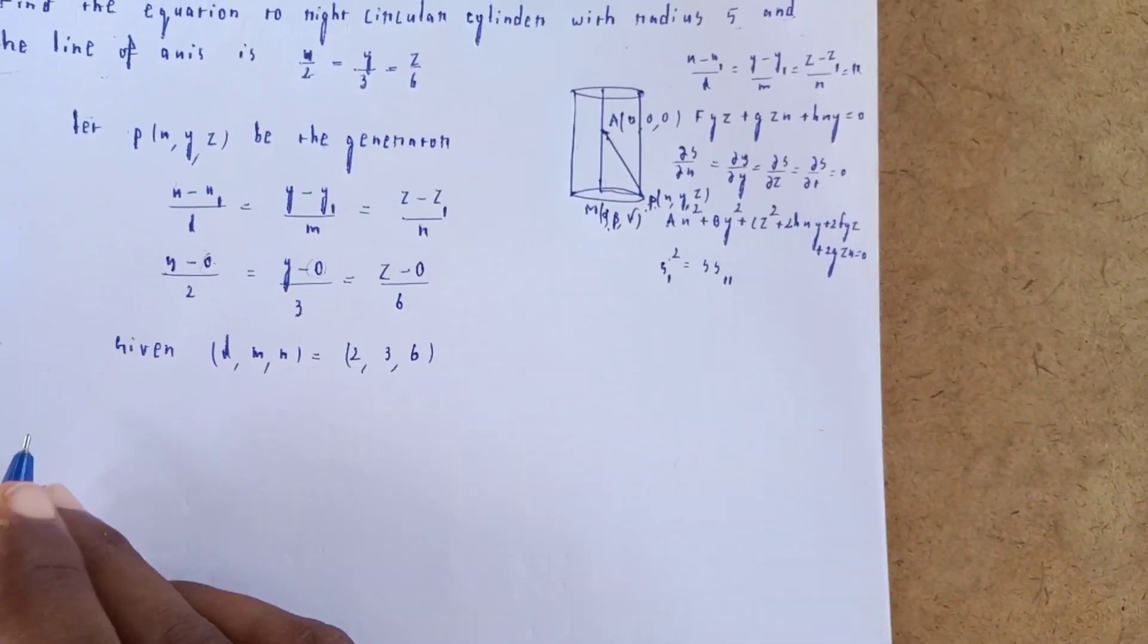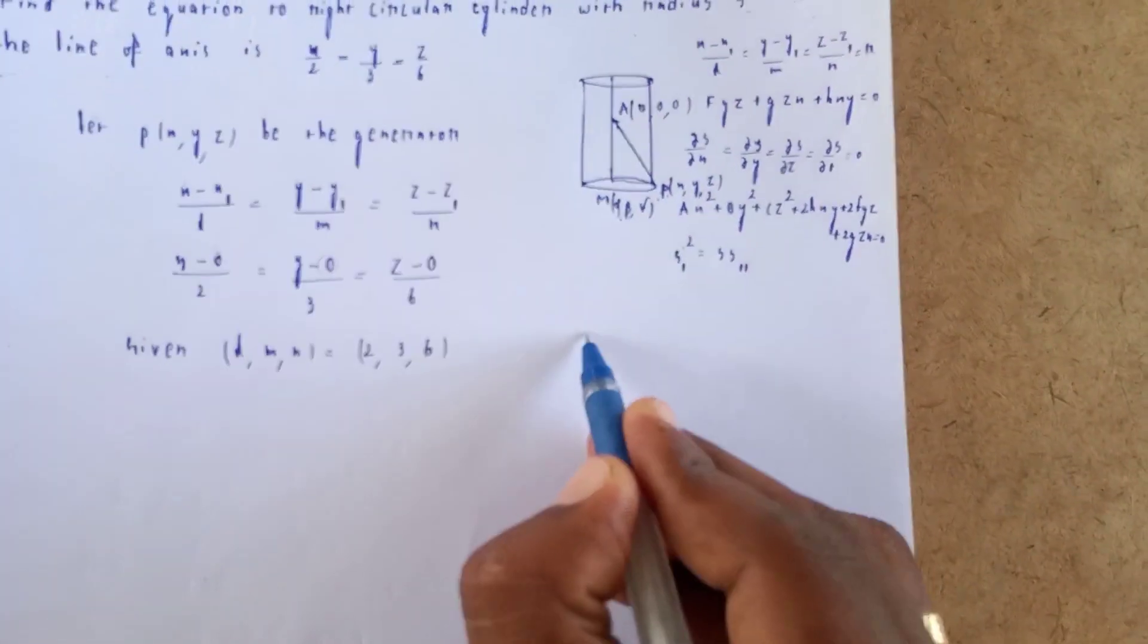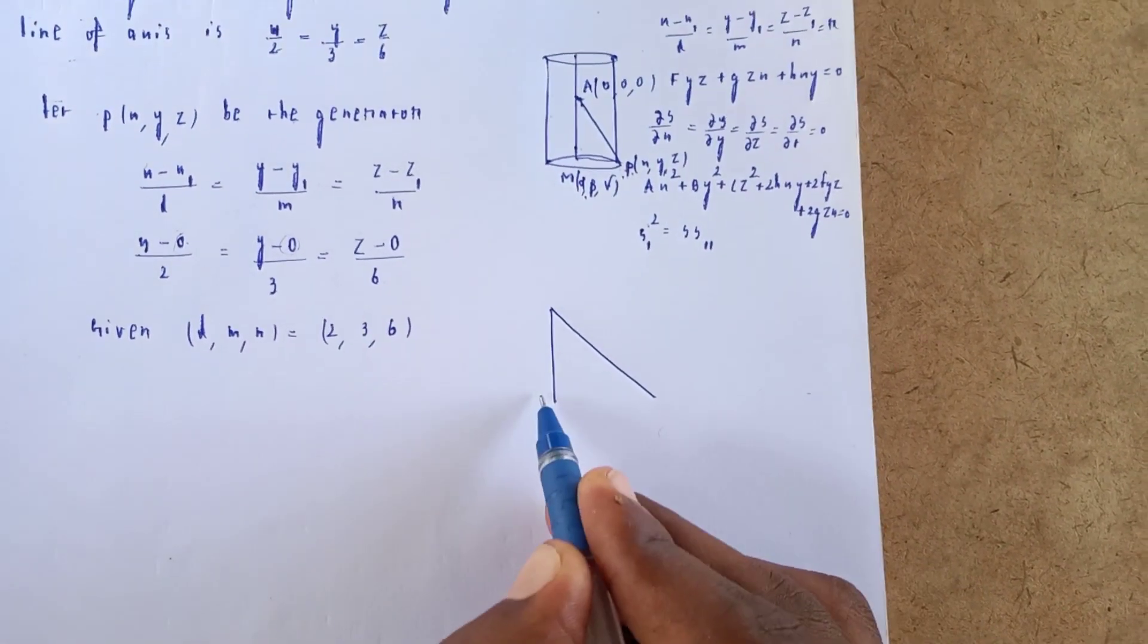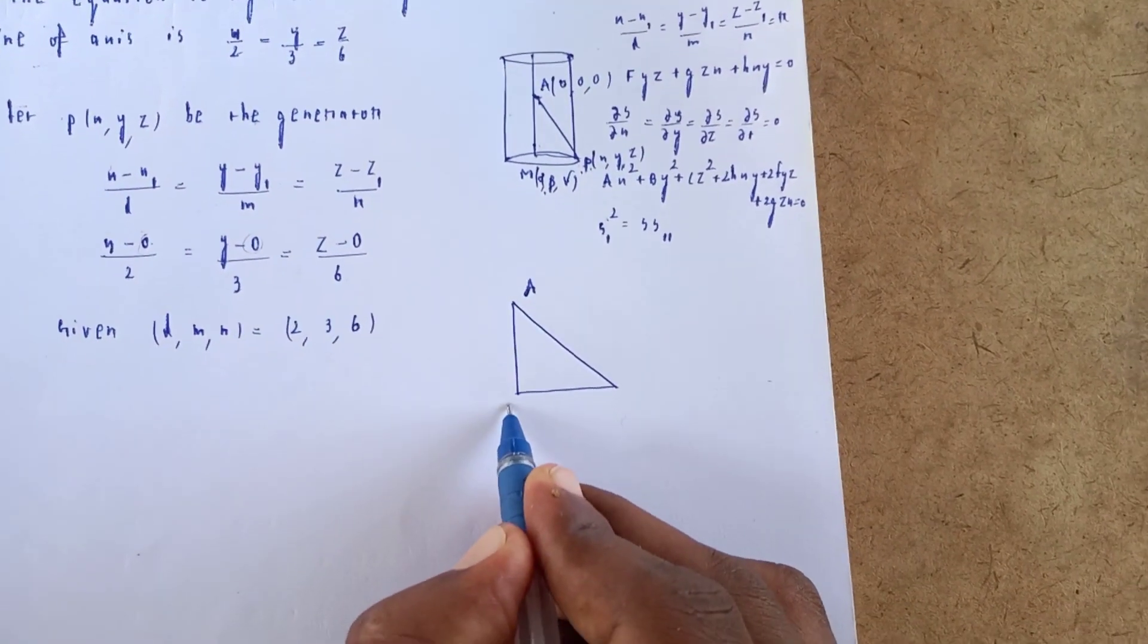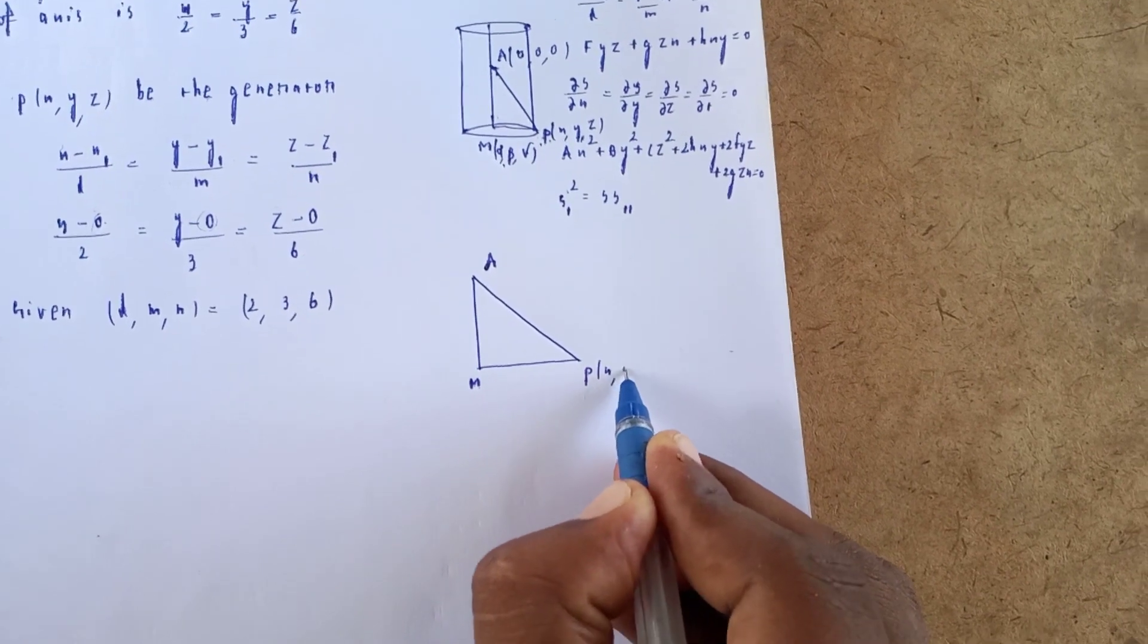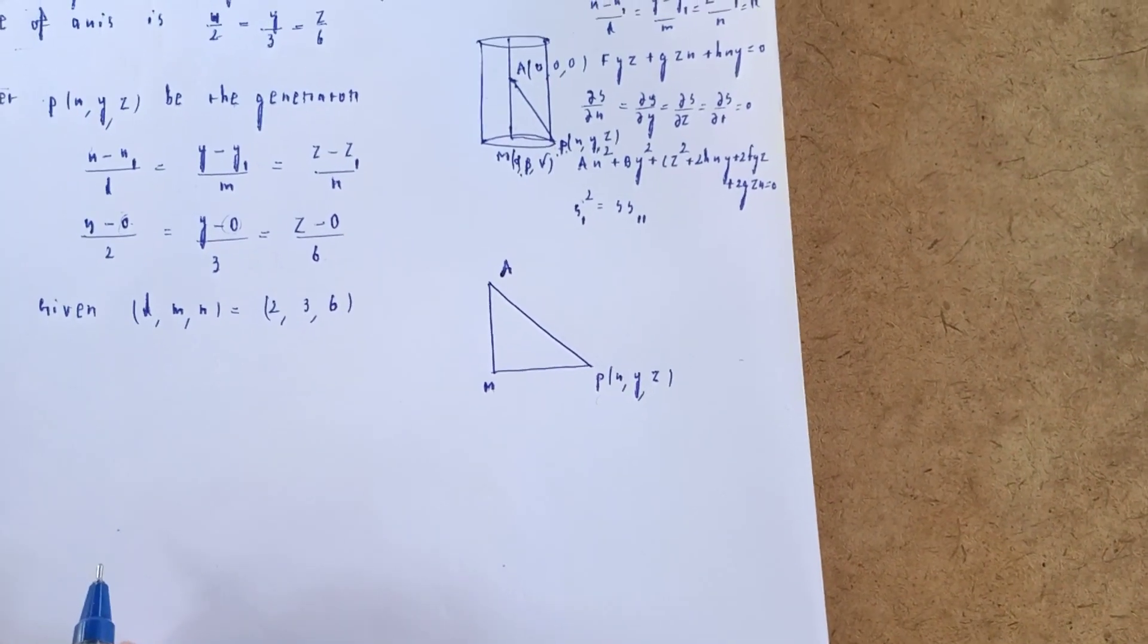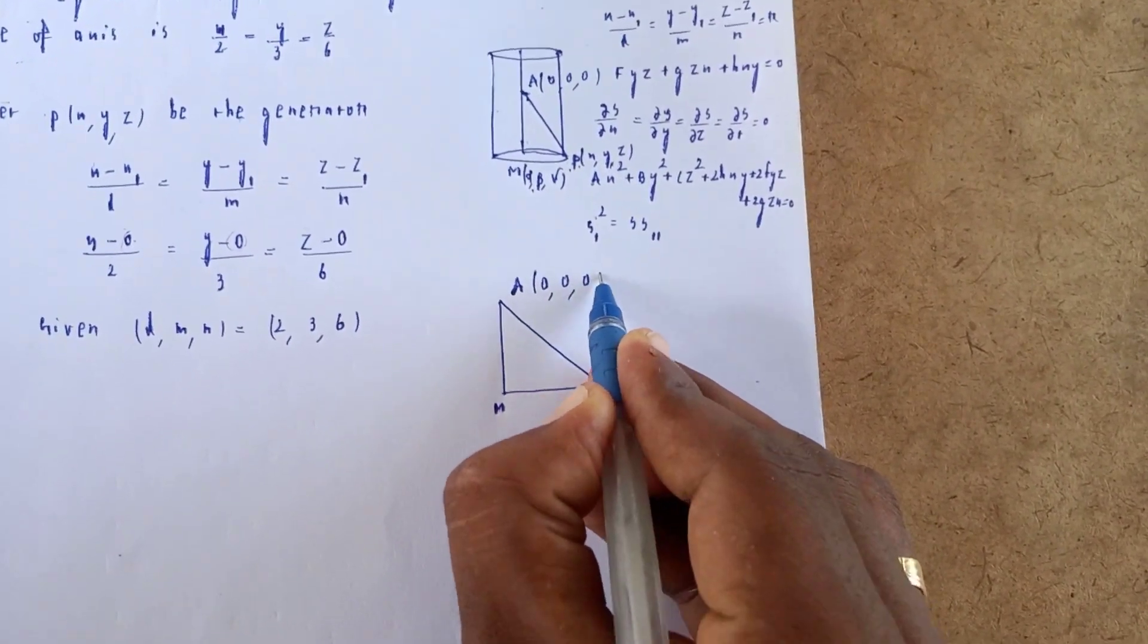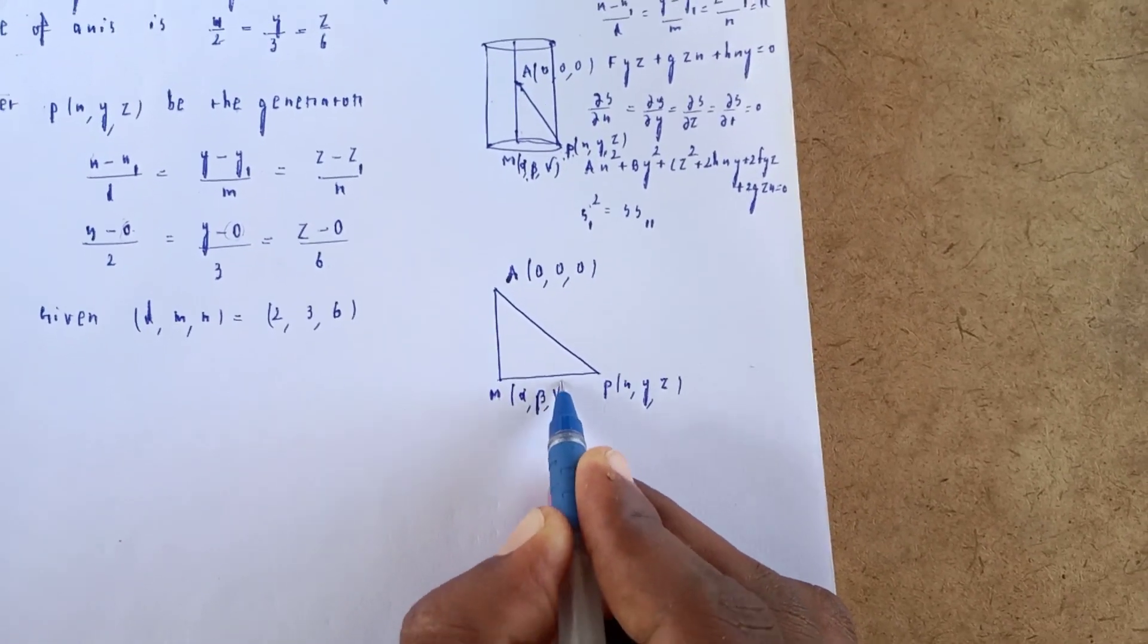From this triangle, point P is at (x, y, z) and M is at (α, β, γ).